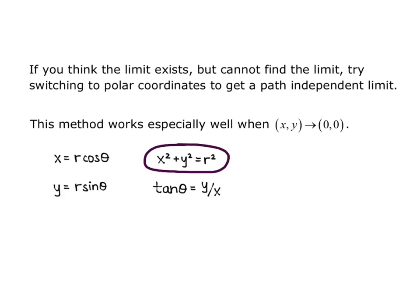So what that tells me is that any time I have an x squared plus y squared in my function, and I can't show that the limit exists some other way, I might consider switching to polar. And notice that because x squared plus y squared equals r squared, if x, y is going to 0, 0, then r must be going to 0 also, regardless of the angle.